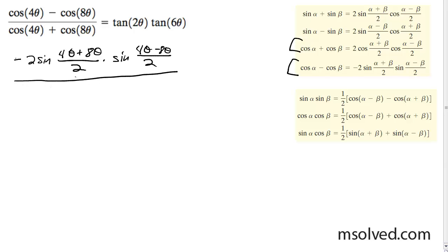For the denominator, we're gonna get 2 cosine of 4 theta plus 8 theta over 2, times cosine of 4 theta minus 8 theta over 2.